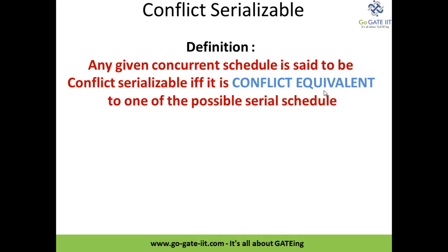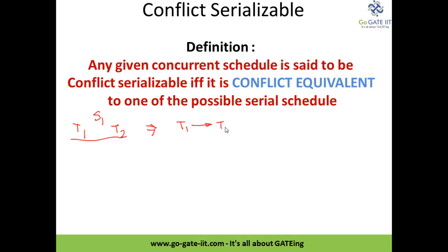Before we move to conflict equivalent, we will first see what 'possible serial schedule' means. Serial schedules are nothing but a set of transactions. Say for example you have transaction T1 and T2. Serial schedule means the instructions of T1 will perform first and then T2, or T2 will execute first and then T1. So these are the two possible serial schedules.